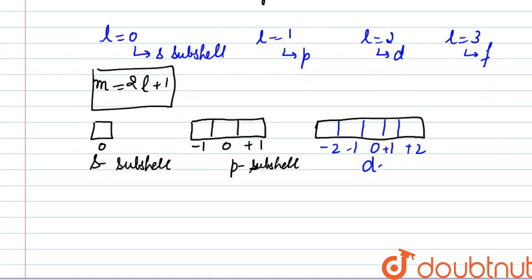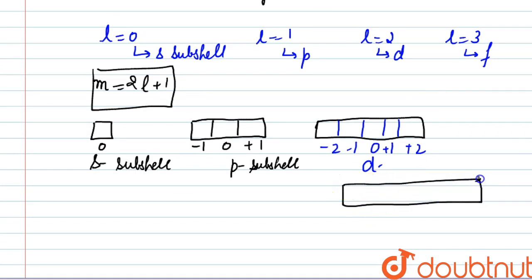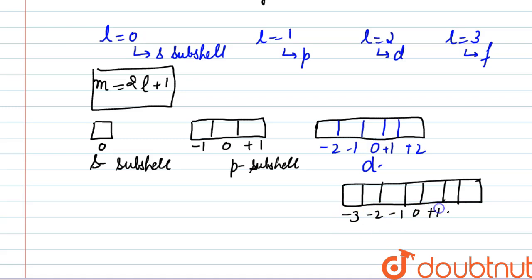For the F subshell similarly, we find the number of orbitals: 2 into 3 plus 1, that is 7. So we write it as minus 3, minus 2, minus 1, 0, plus 1, plus 2, and plus 3.